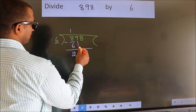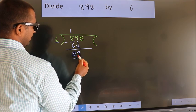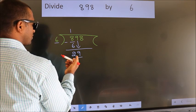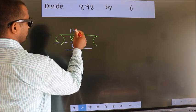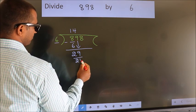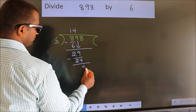After this, bring down the beside number. So 9 down. So 29. A number close to 29 in 6 table is 6 fours 24. Now we subtract. We get 5.